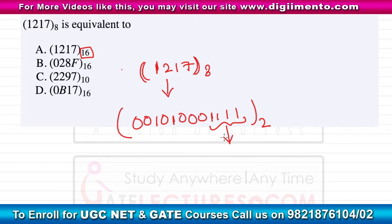So these four bits (1111) will represent F here because the decimal equivalent is 15 of these four digits, and 15 is represented by F in the hexadecimal number system. So this will represent F.